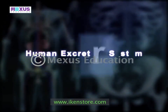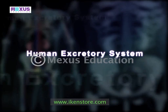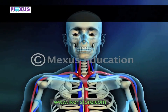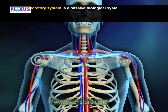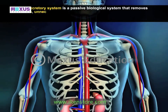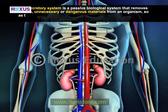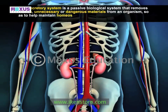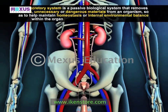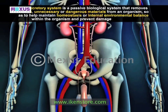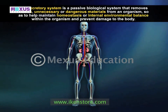The human excretory system is a passive biological system that removes excess, unnecessary or dangerous materials from an organism so as to help maintain homeostasis, or internal environmental balance, within the organism and prevent damage to the body. It thus forms an important feature of human anatomy.